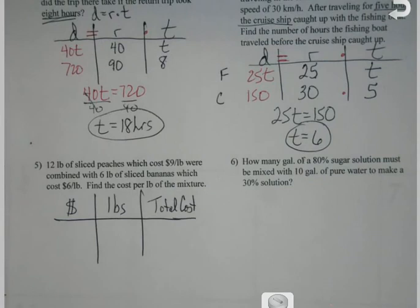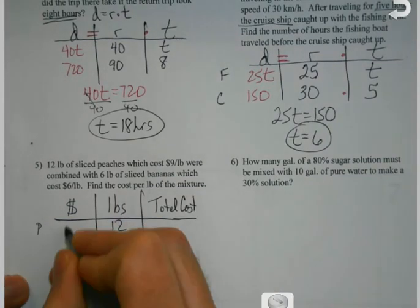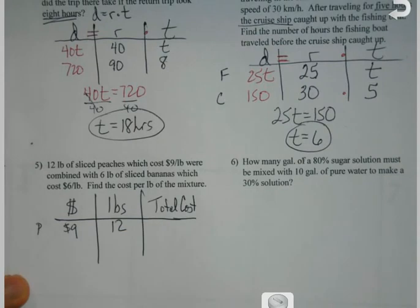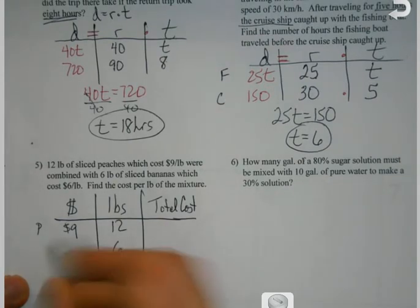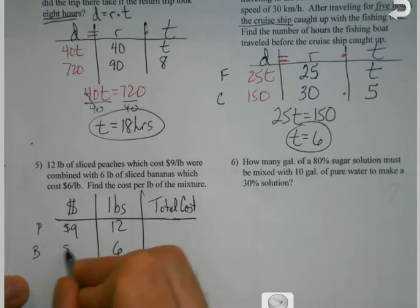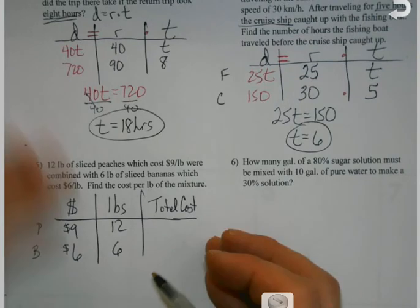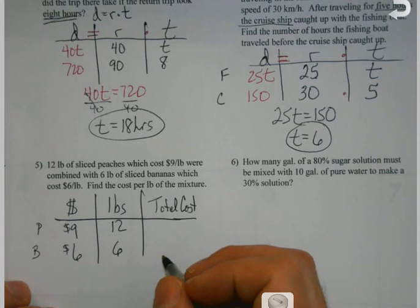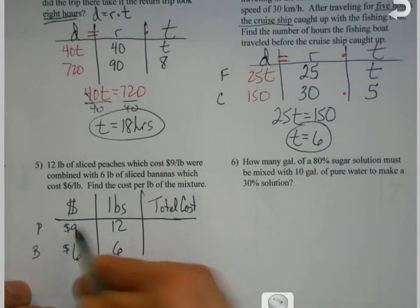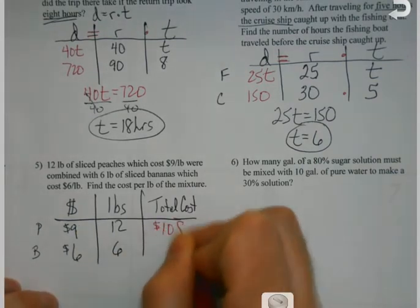So I'm like, okay, what do I know? I got 12 pounds of peaches that are $9 per pound, and then I have six pounds of bananas which are $6 a pound. Find the total cost of the mixture. Oh, find the cost per pound, excuse me, of the mixture. You're like, okay, well if it's $9 a pound and there's 12 pounds, I spent $108 on peaches. Yeah. If bananas are $6 a pound and I bought six pounds, I spent $36 on those.